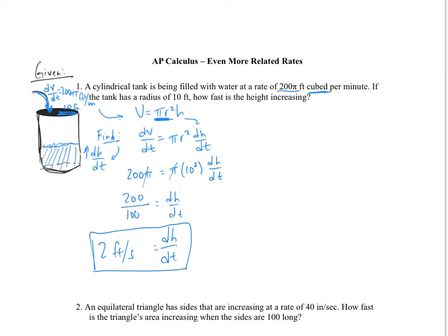Let me recap why we did not need to take the derivative of r. The radius is a constant — on this cylindrical shape, the radius is not changing at all, so there's no need for dr/dt because it would be 0. Even if you applied the product rule and included dr/dt, that whole term would reduce to 0 and go away regardless.